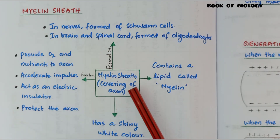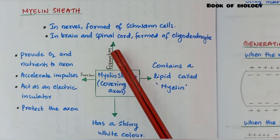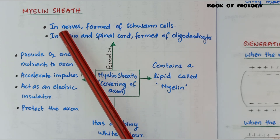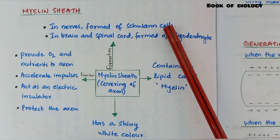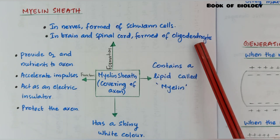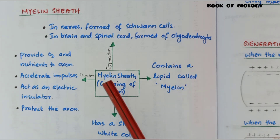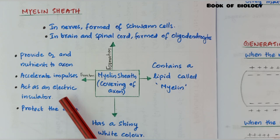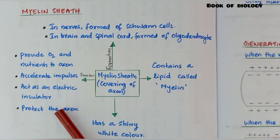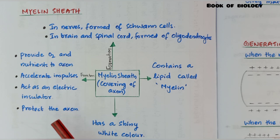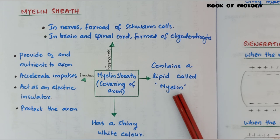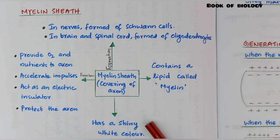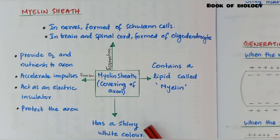Next topic: myelin sheath. Myelin sheath is the covering which we can see on the axon. In the case of nerves, it is formed of Schwann cells, but in the case of the brain and spinal cord, it is formed of oligodendrocytes. Its functions: provide oxygen and nutrients to the axon, accelerate impulses, act as an electric insulator, and protect the axon. It contains a lipid called myelin and has a shiny white color.